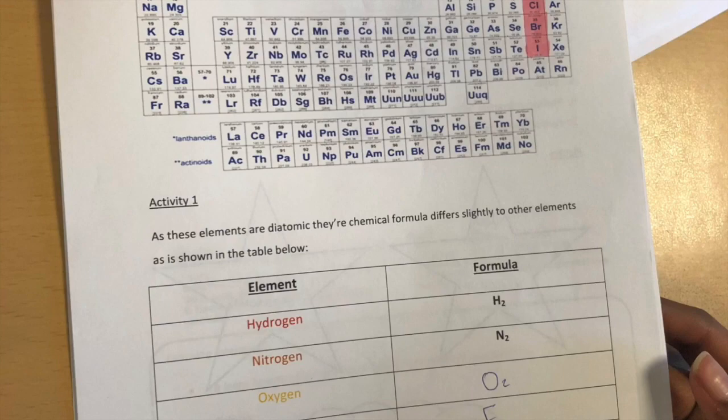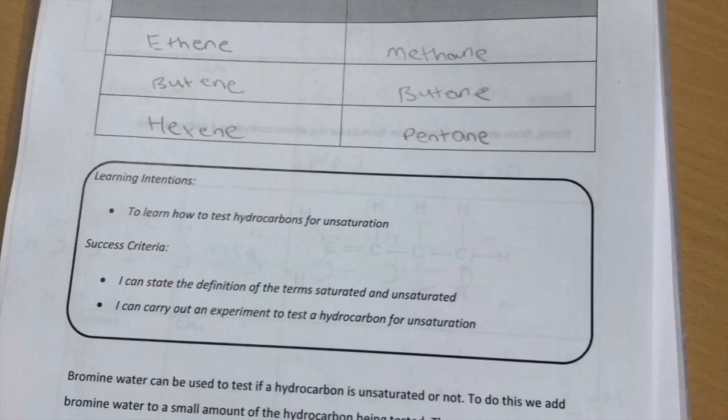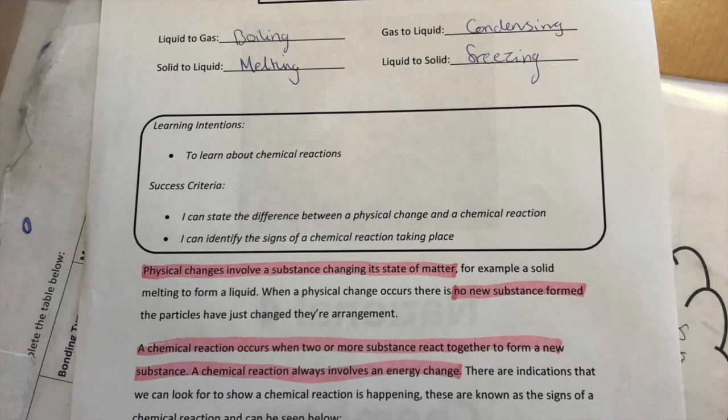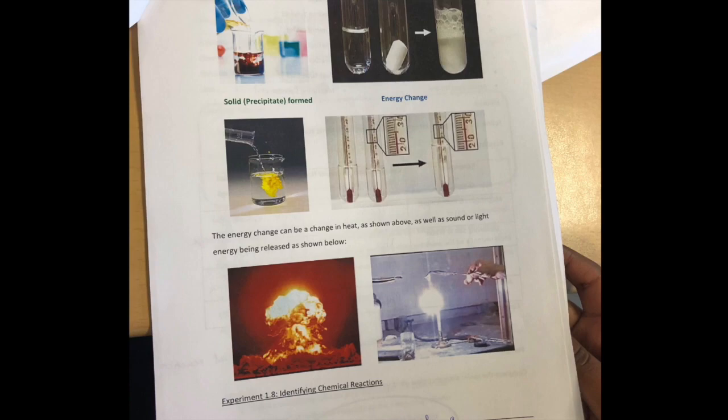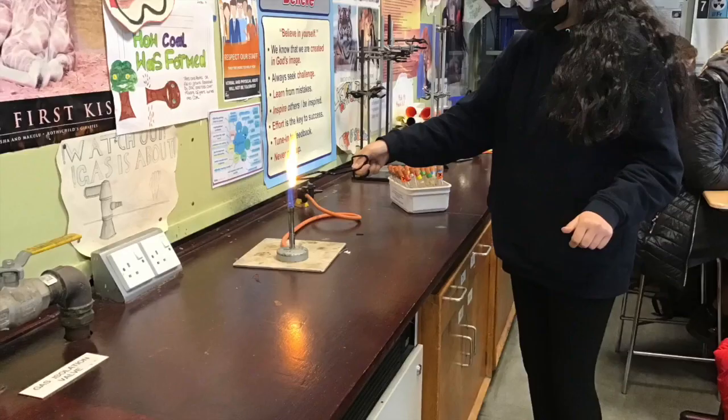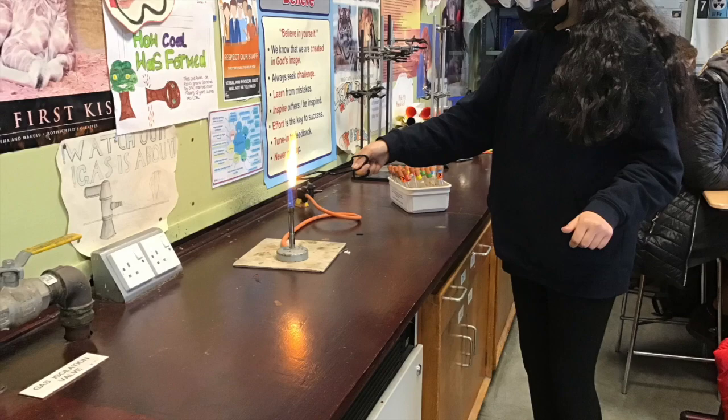This is a selection of some of the written work produced by our National 4 class. In both National 4 and National 5, there is an emphasis on developing practical skills throughout the course. Pupils will be given the opportunity to develop these skills individually and in teams.